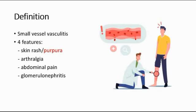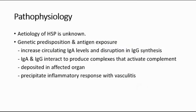The pathophysiology of HSP — the etiology is unknown, but several studies show that it might be due to genetic predisposition and antigen exposure, due to increased circulating IgA levels and disruption in IgG synthesis. The IgA and IgG interact to produce complexes that activate the complement system, causing complement molecules to be deposited in affected organs, precipitating an inflammatory response with vasculitis.